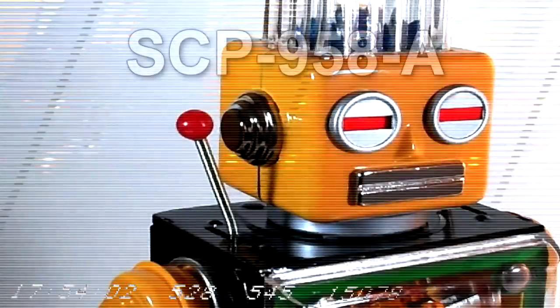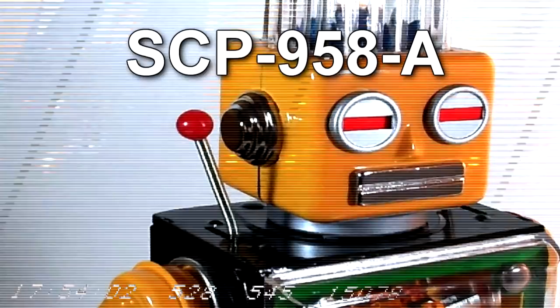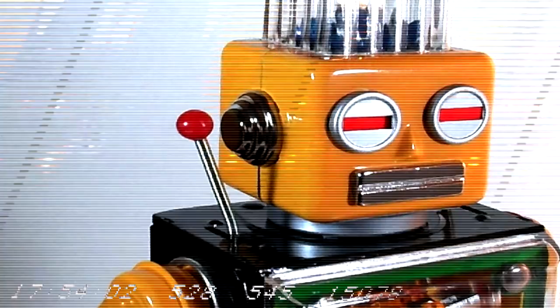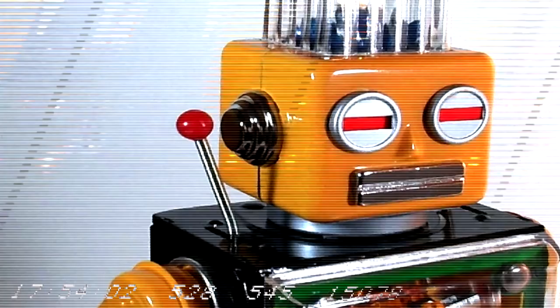SCP-958-A is a humanoid toy robot composed primarily of plastic and tin. SCP-958-A is 19 cm tall and has a mass of 214.8 grams. The words General Beep by Dr. Wondertainment are inscribed upon the bottom of SCP-958-A's right foot.